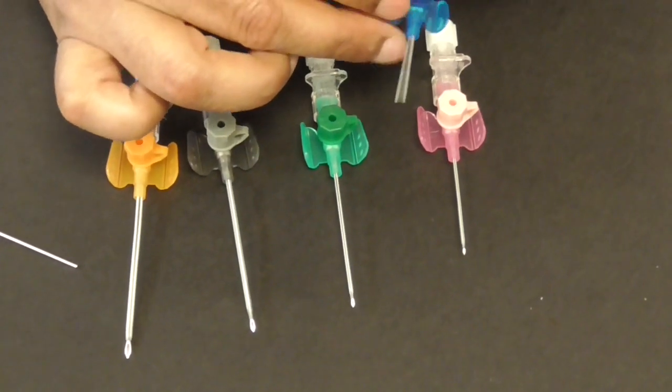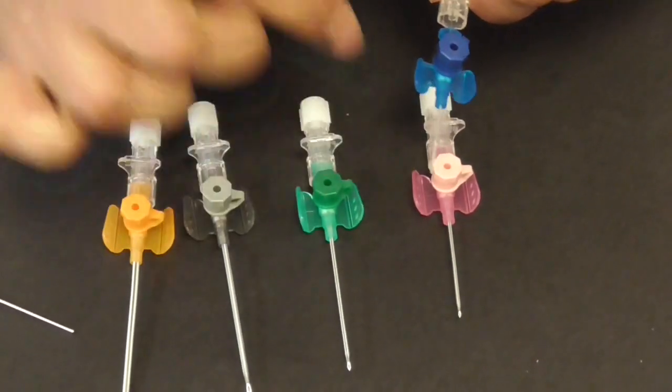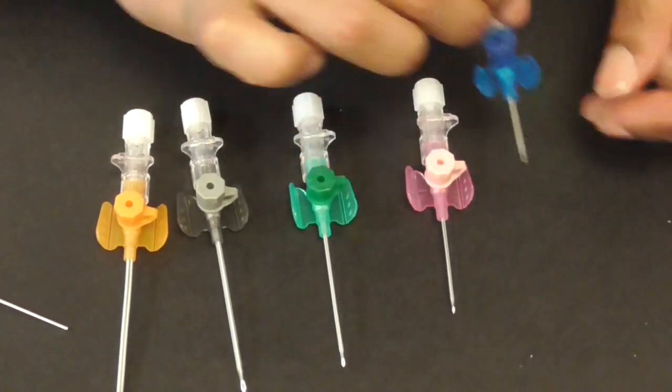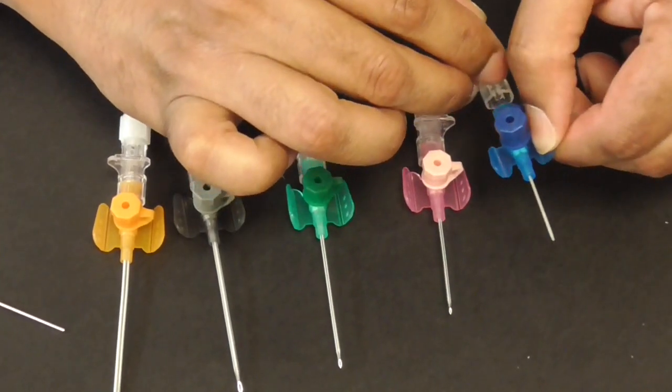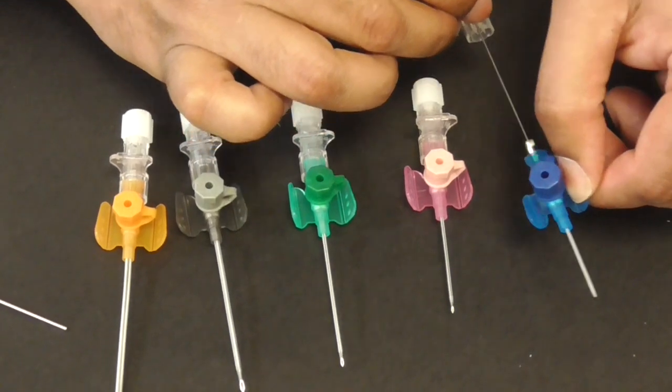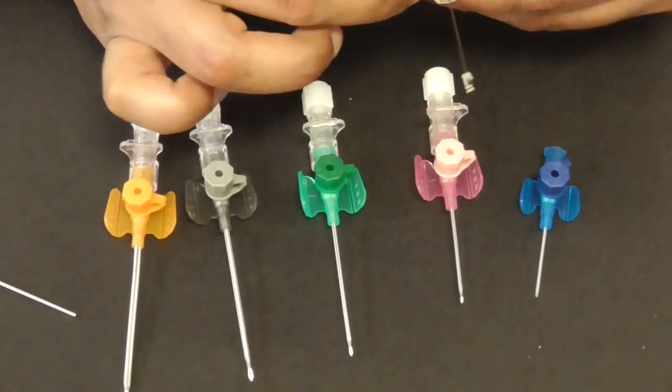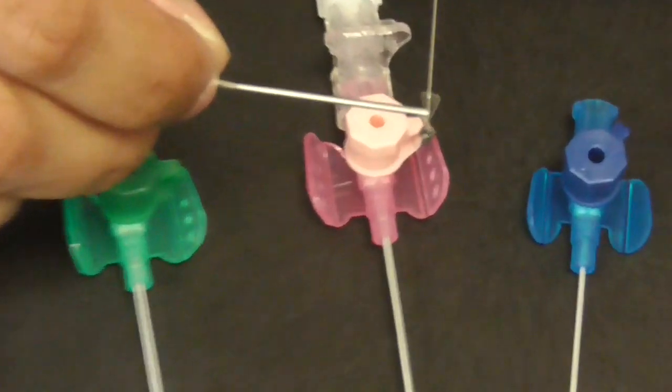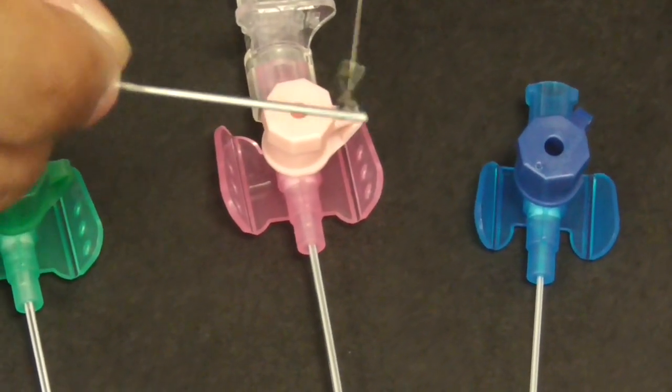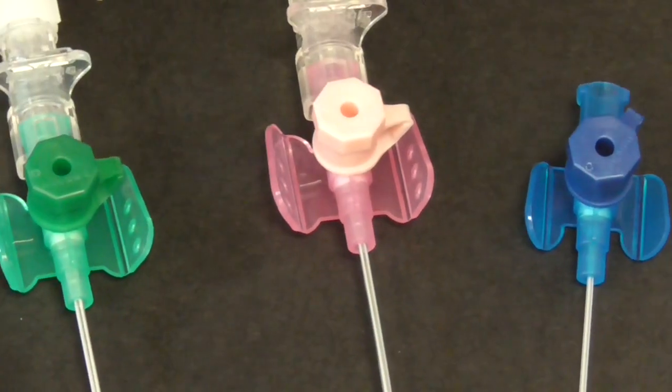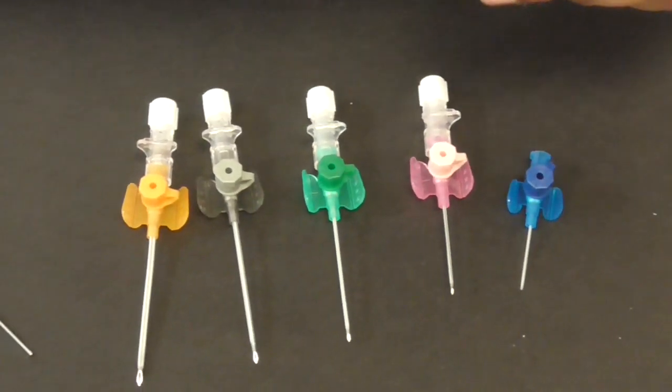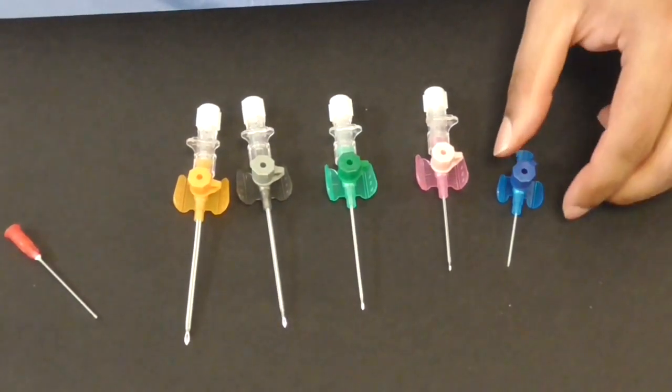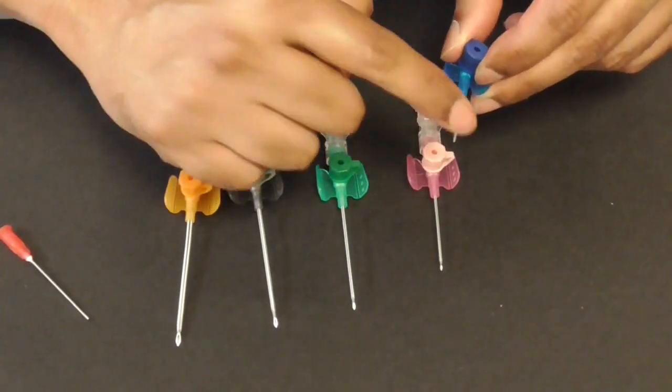So the stilette or trocar is withdrawn the cannula which is the plastic bit is left behind. Now in the old days when you took the trocar out then you have this pointy thing that could hurt you but nowadays you've got a very clever little mechanism which sheathes the pointed bit of the trocar which is like a needle so that you don't hurt yourself. Notwithstanding that once you've taken this out very promptly take a sharp bin and put it, did you hear that, it's gone into the sharp bin.